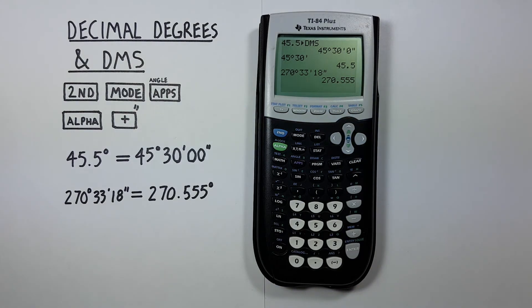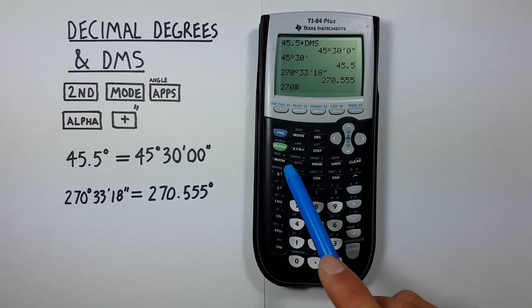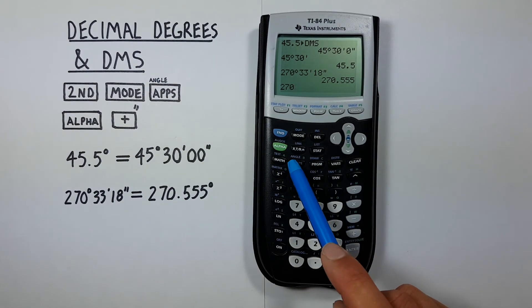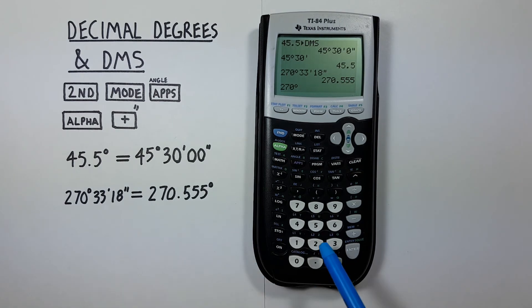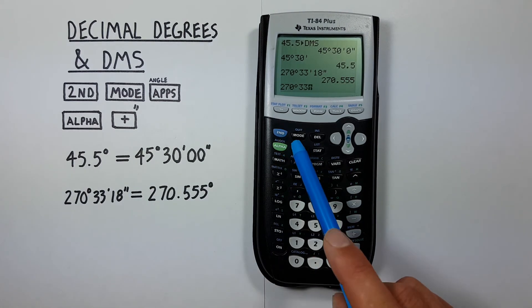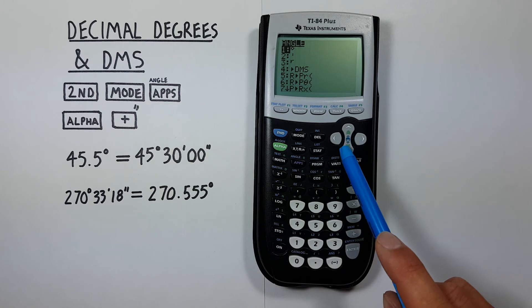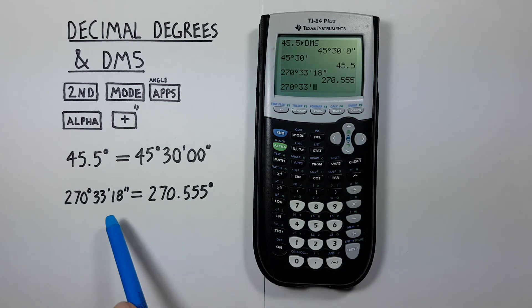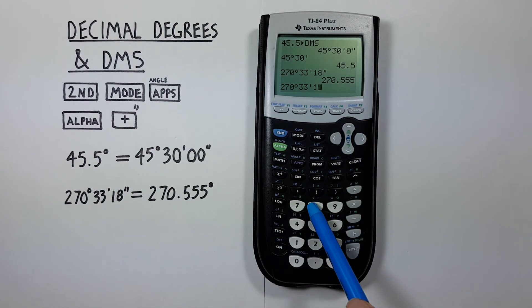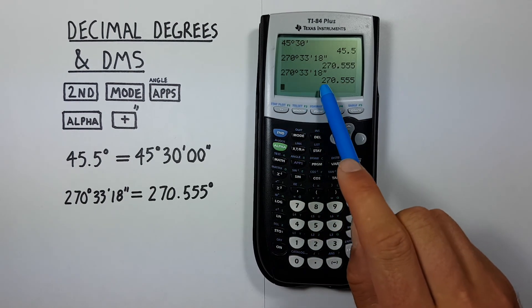One more time quickly. We enter that as 270 degrees, 33 minutes, 18 seconds with the alpha key. There we go. 270.555.